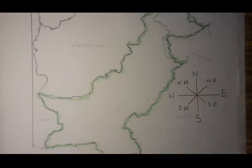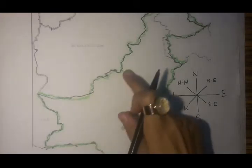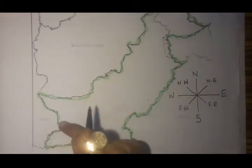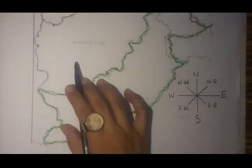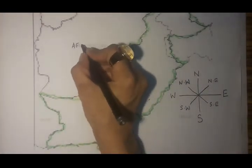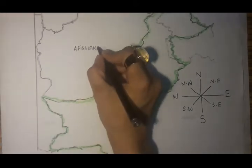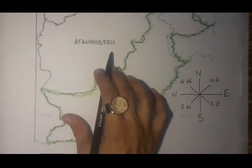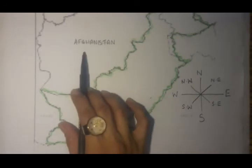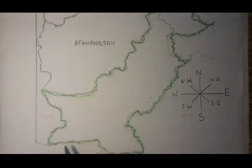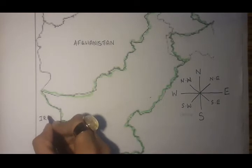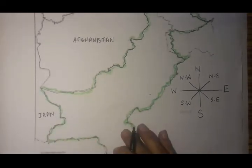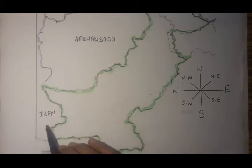Now beginning with the neighboring states of Pakistan — this green line, this border, this is our Pakistan. We have four main neighbors. Number one is Afghanistan. Looking at the cardinal directions, Afghanistan is situated to the northwest of Pakistan. The next neighbor is Iran, and Iran is situated to the southwest of Pakistan.